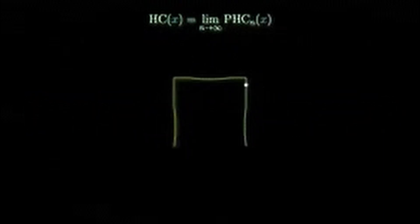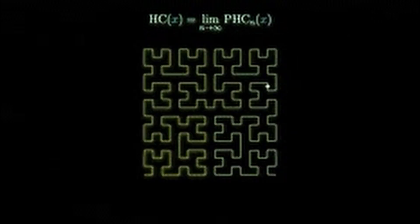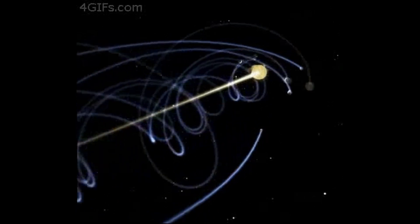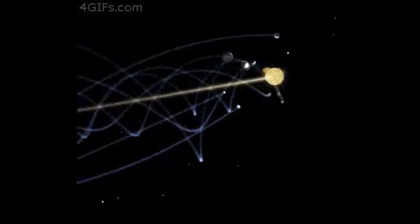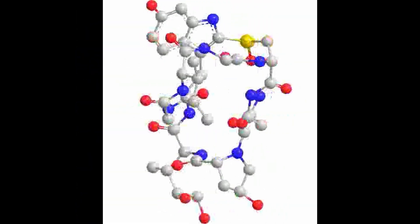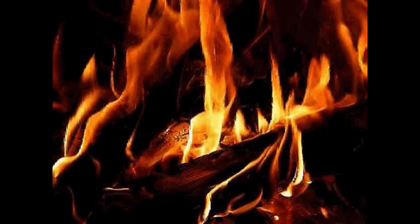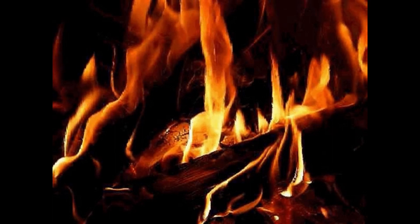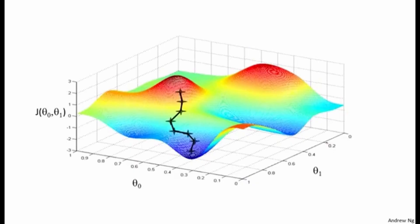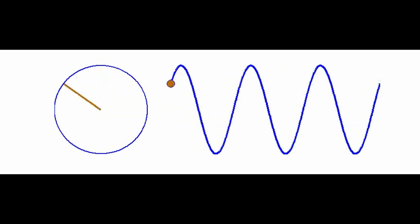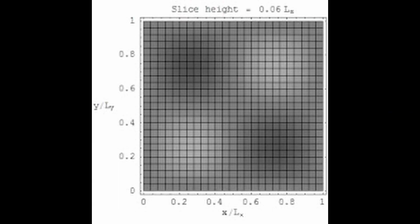There are different ways to calculate entropy depending on the type and state of the system. For a system that undergoes a reversible process at a constant temperature, such as an ideal gas expanding or compressing isothermally, the entropy change can be calculated by dividing the heat transfer by the temperature. The formula is S = Q/T, where S is the entropy change, Q is the heat transfer, and T is the temperature. For a system that undergoes a chemical reaction, the entropy change can be calculated by subtracting the entropy of the reactants from the entropy of the products, using standard entropies found in tables or calculated from heat capacities.